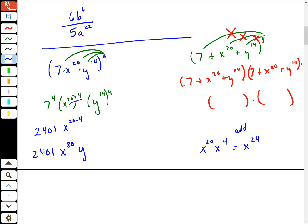Okay, same thing for y. So this should be y, 14 times 4. 14 times 4, I think, I want to say it's 56, but if you're at all. There we go, 56. Look at that. So many years of math work. 2401, x to the 80th, y to the 56th.